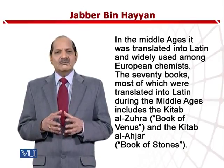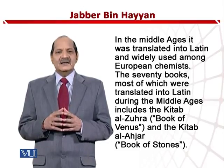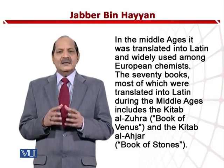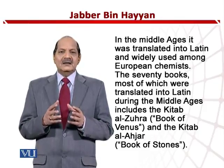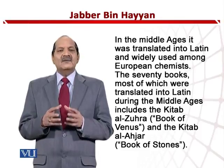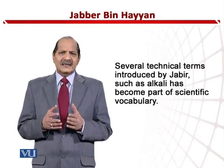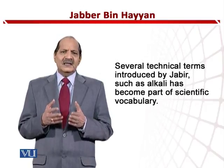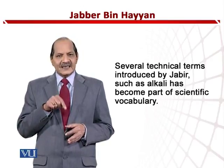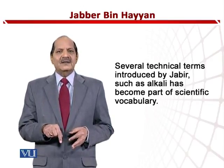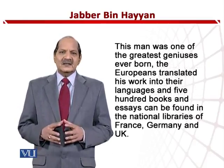His 70 books, most of which were translated into Latin during the Middle Ages, include the Kitab al-Zohra (Book of Venus) and the Kitab al-Hajr (Book of Stones). Several technical terms were introduced by Jabir, such as alkali, which has become part of scientific vocabulary and is still used today.